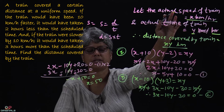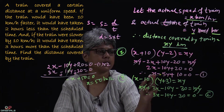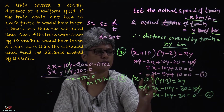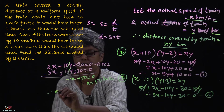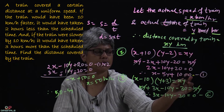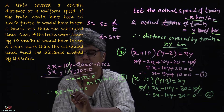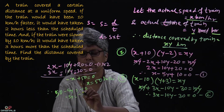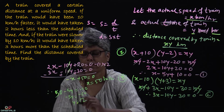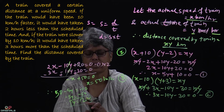X is the actual speed of the train, so x is equal to 50 km per hour. Now substituting x equal to 50 into Equation 1: 50 minus 5y plus 10 equal to 0, giving minus 5y equal to minus 60, so y is equal to 12 hours. That is the actual time taken.